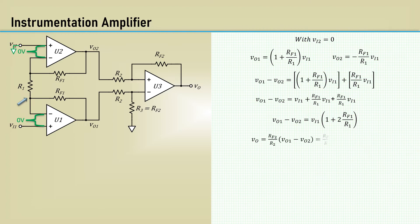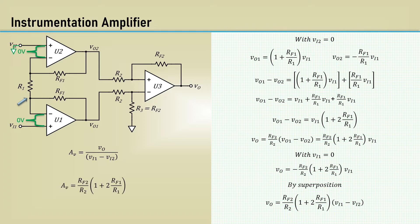Now with VI1 equals 0, we get the negative version. By superposition, we get this expression for the output voltage VO. Now we can make the expression for the voltage gain, AV, as VO over the difference between the two inputs, which yields this, a nice compact formula for gain.